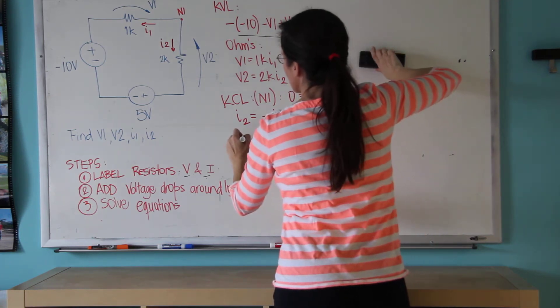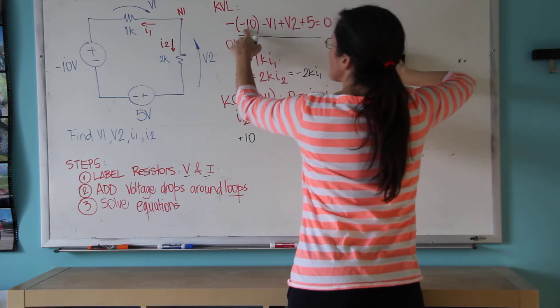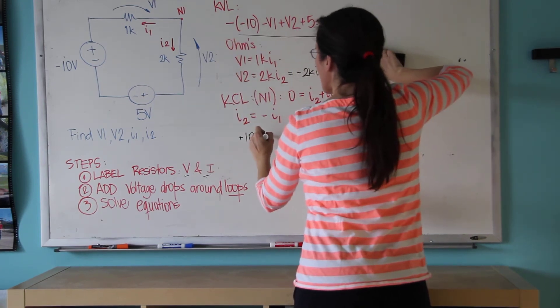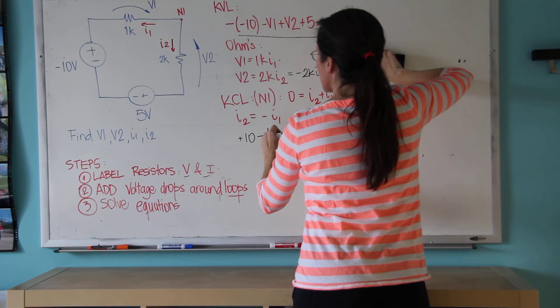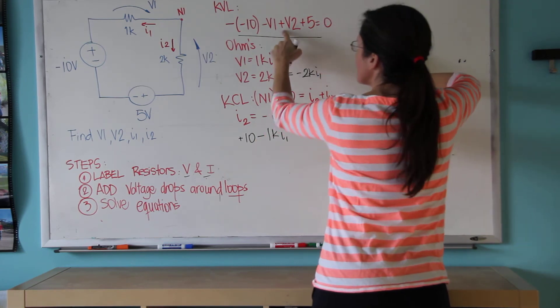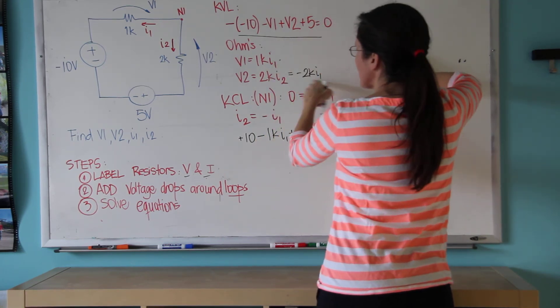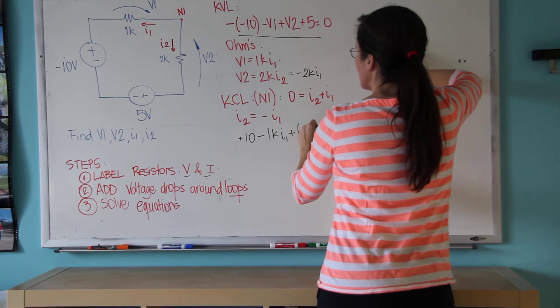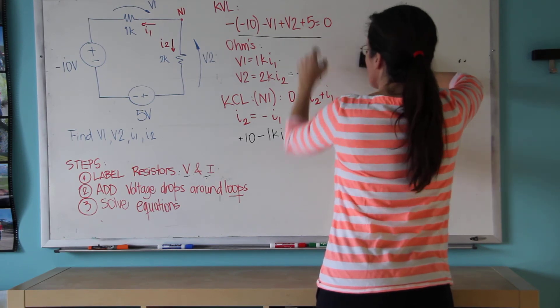Now my final equation is 10 minus V1, which is 1K times I1, plus V2, which is minus 2K times I1, plus 5.